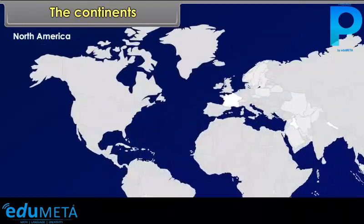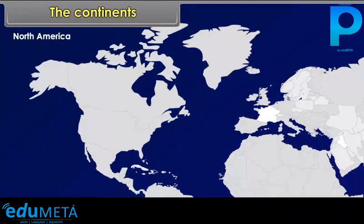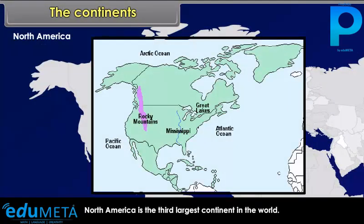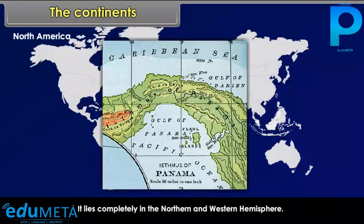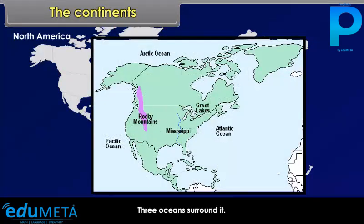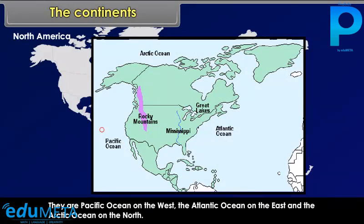North America is the third largest continent in the world. It is linked with South America by the Panama Isthmus. It lies completely in the Northern and Western Hemisphere. Three oceans surround it: the Pacific Ocean on the west, the Atlantic Ocean on the east, and the Arctic Ocean on the north.